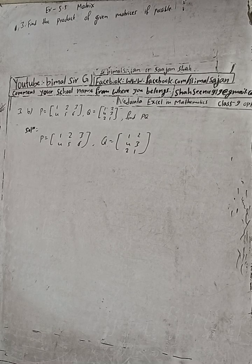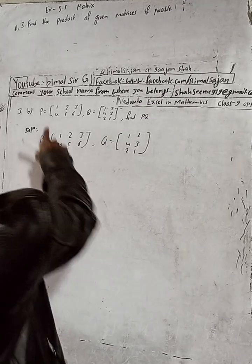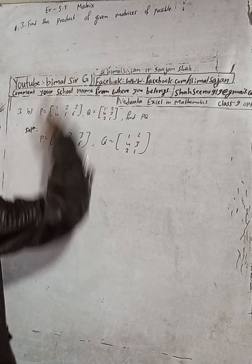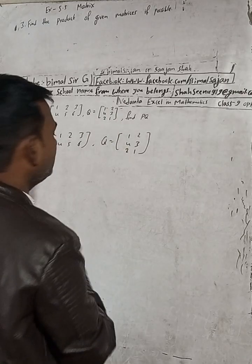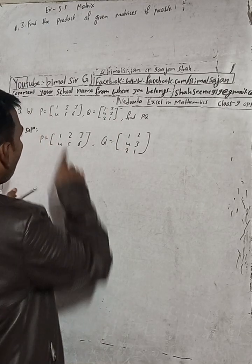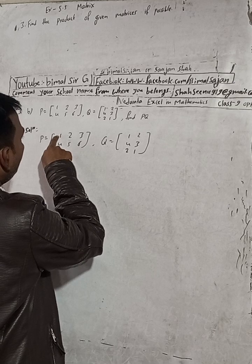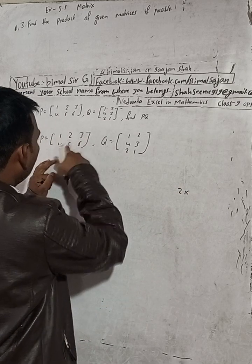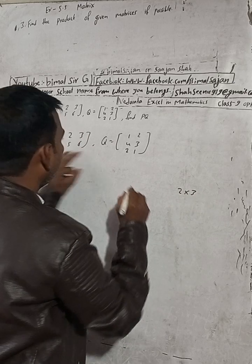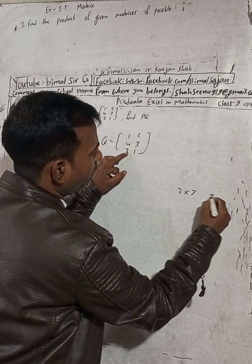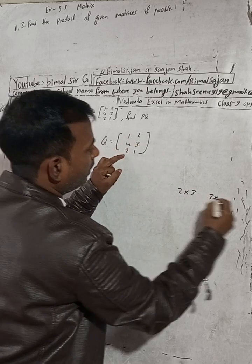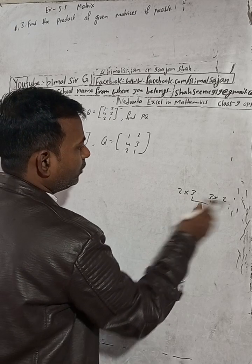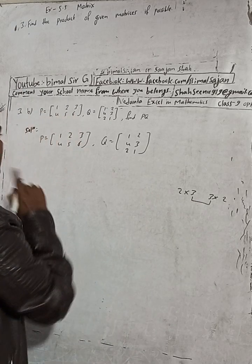Question 3B. Here is the P matrix and the Q matrix. We are going to find PQ, so we have to find the product if possible. First, check if it is possible. P has 2 rows and 3 columns. Q has 3 rows and 2 columns. The inner dimensions are both 3, so they are the same — this multiplication is possible, and the result will be a 2×2 matrix.